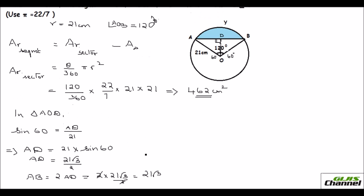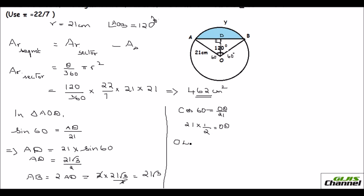Now find the height OD. Using cos 60° = OD/21, and cos 60° = 1/2, we get OD = 21 × 1/2 = 21/2.